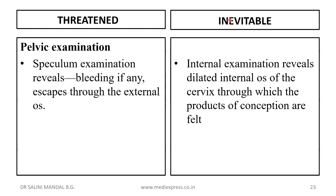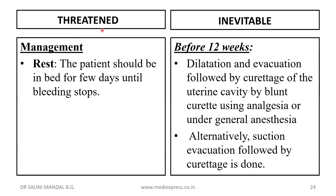On pelvic examination in threatened abortion, only slight bleeding escaping through the external os is seen; the internal os cannot be visualized. In inevitable abortion, internal examination reveals a dilated internal os of the cervix through which the products of conception are felt. For management of threatened abortion, the patient is advised bed rest until the bleeding stops, which helps to revert the condition.